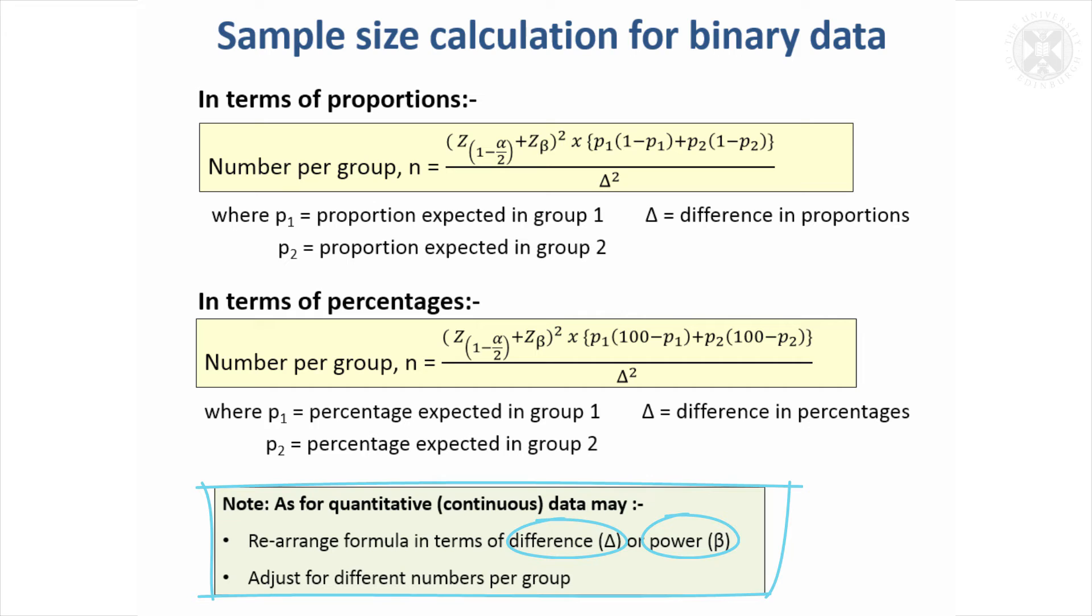For a given number of animal samples or sample size, we can calculate what difference in probabilities we're likely to be able to detect. You can have it rearranged in a similar way.